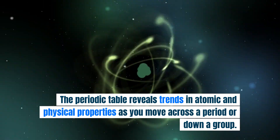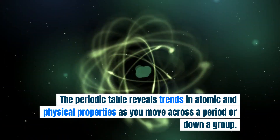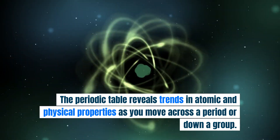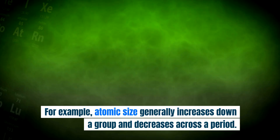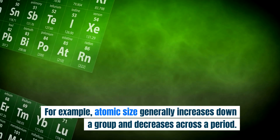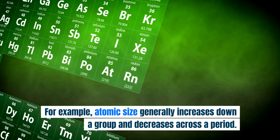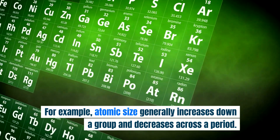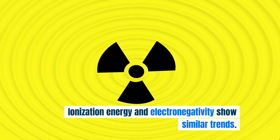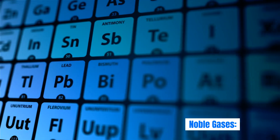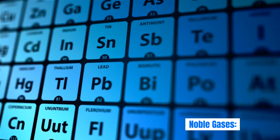For example, atomic size generally increases down a group and decreases across a period. Ionization energy and electronegativity show similar trends.